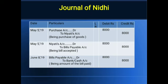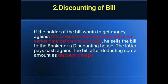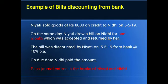Now I am moving to the second method: discounting of bill from bank. The holder of the bill — the drawer — wants to get the money before the due date. The bank provides this facility; the bill can be discounted from the bank. The drawer can get cash against the bill, and the bank deducts a slight amount called discount charges. These charges are a loss for the drawer. Now I am converting the same question into the discounting-from-bank method.